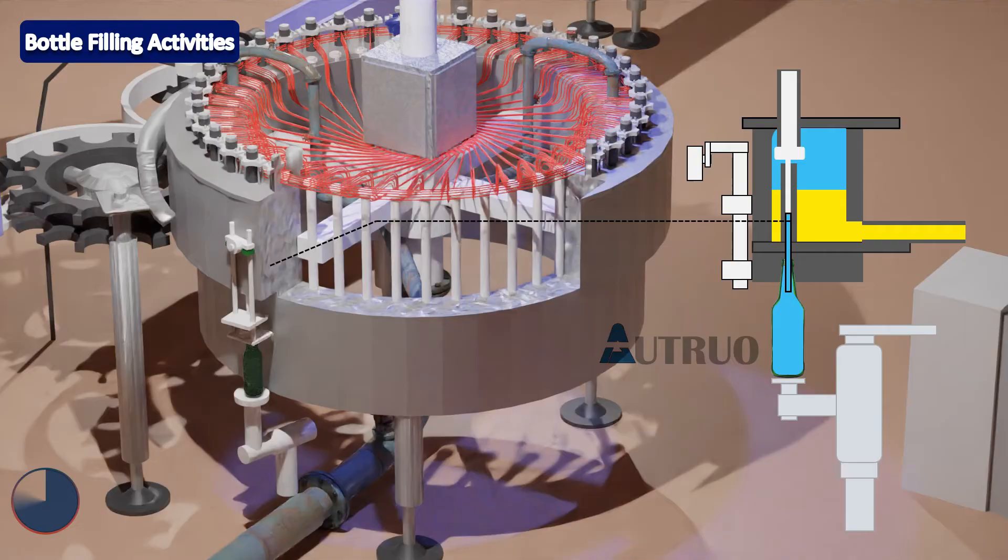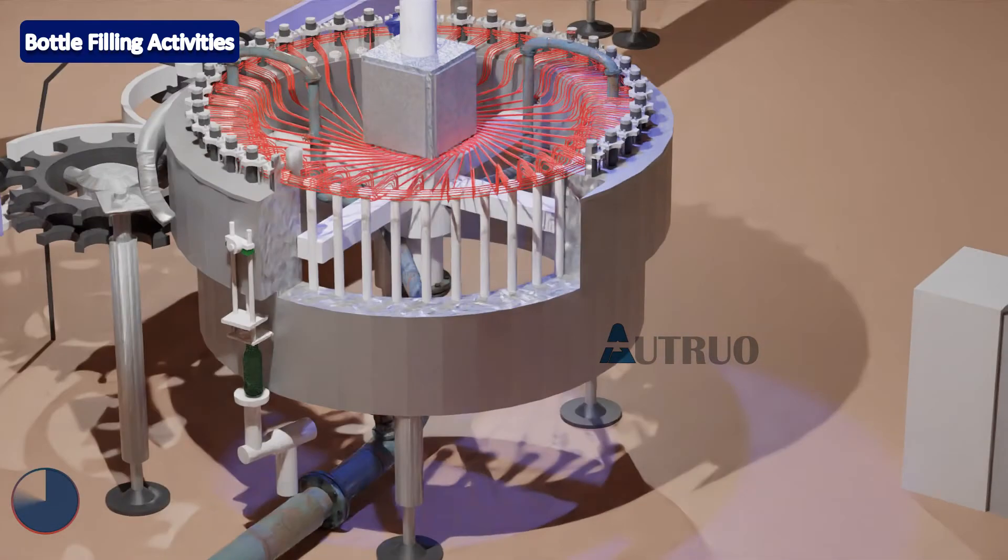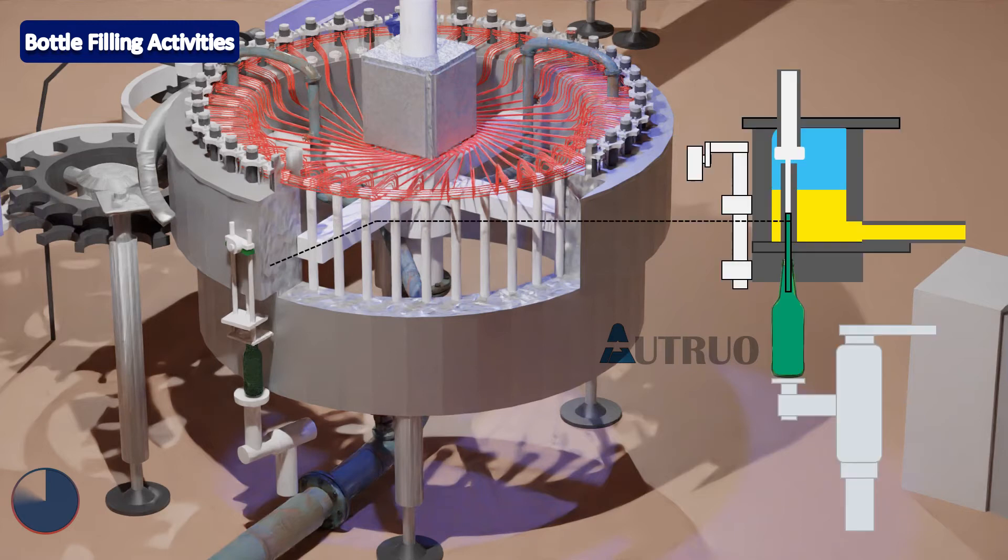When the filler rotation is between 10 degrees to 15 degrees, the PLC will use compressed air to activate the pre-evacuation valves, and removal of CO2 and oxygen will take place within the bottle.